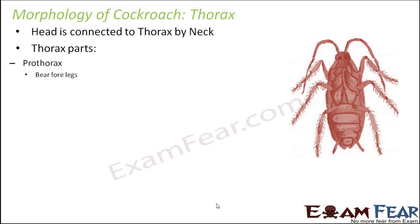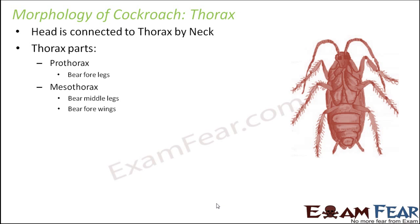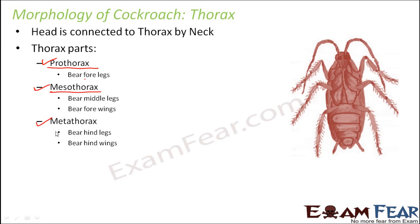There are three parts of the thorax: prothorax, mesothorax, and metathorax. 'Meso' means middle, so the middle portion is mesothorax. The initial portion is prothorax and the later portion is metathorax.